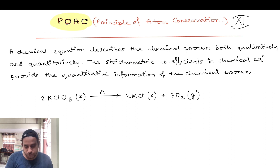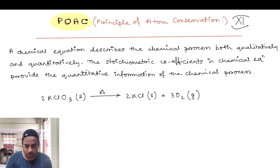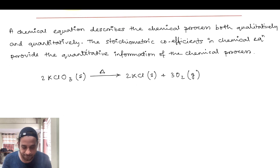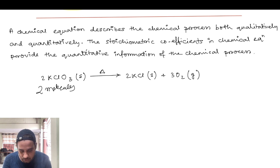Stoichiometric coefficients mean the numbers — like 2, 2, and 3 — in a balanced chemical equation.